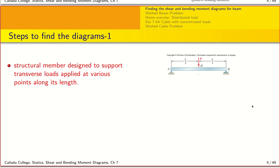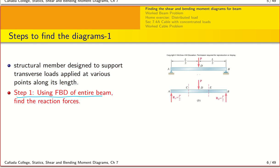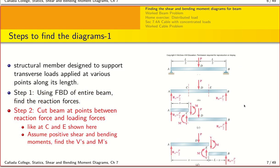Let's go through a step-by-step process for finding these diagrams. A beam can support a transverse load — either concentrated or distributed — at various positions along its length. Step one is to find the free body diagram of the entire beam to find the reaction forces. For example, we have Ay and Ax at support A, and By at support B. After analysis, Ay and By are each P/2 in the y-direction, and Ax equals zero.